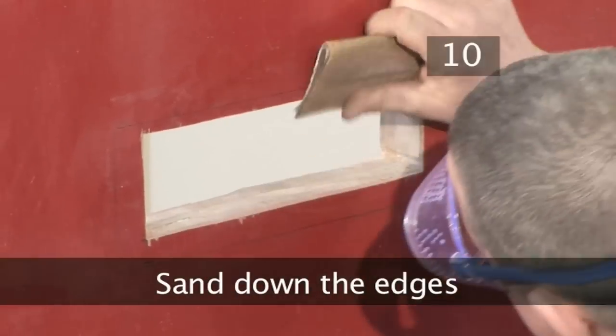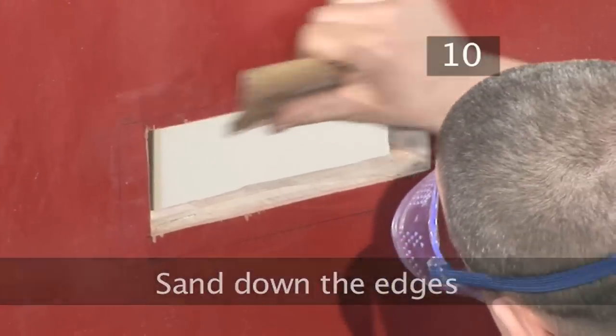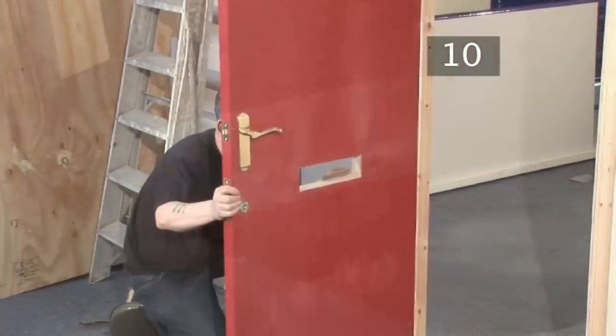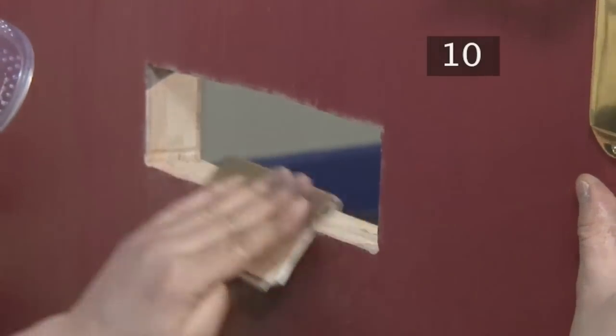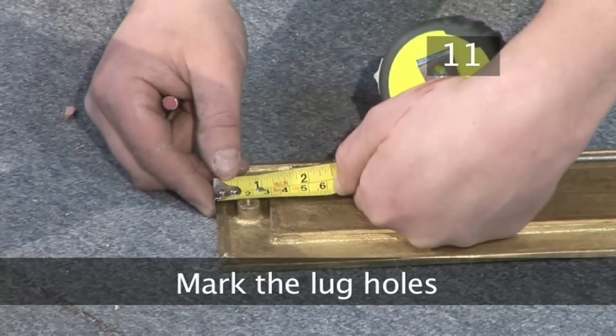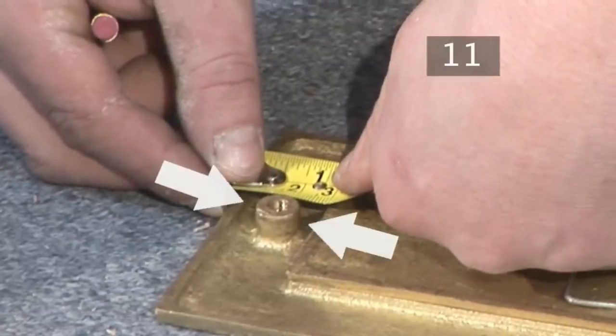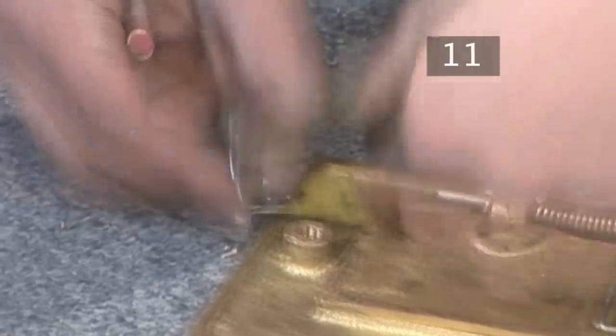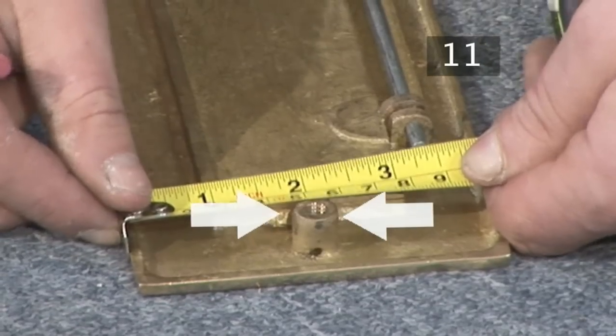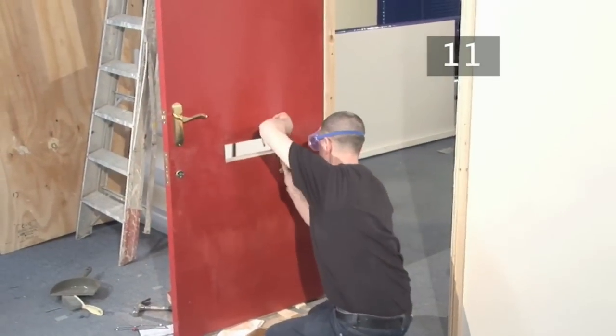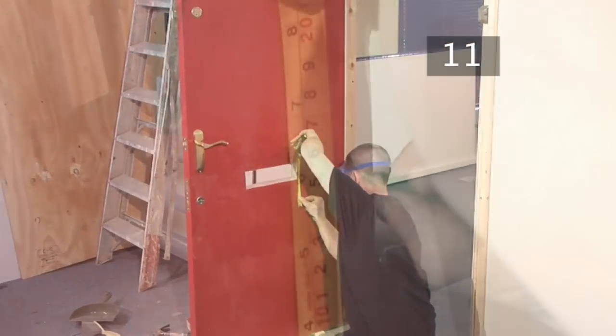Step 10. Sand down the edges. Use sandpaper to smooth down the inside and edges of the hole. Step 11. Mark the lug holes. On the back of the letterbox, there will be a screw fixing on either side of the flap. These are called lugs. Measure their exact position on the back of the letterbox. Now, use this measurement to mark their position on the door.